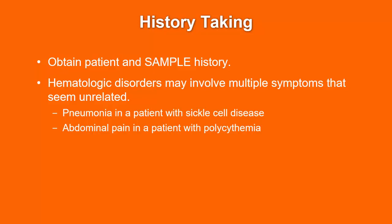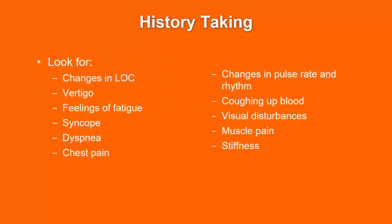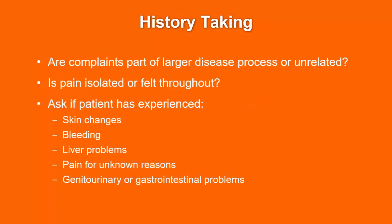Particular areas of abdominal pain could indicate other disease processes as well. Look for: changes in LOC, vertigo or dizziness, feelings of fatigue, weakness, syncope, dyspnea, chest pain, changes in pulse rate and rhythm, coughing up blood, visual disturbances, muscle pain, and stiffness. With your history taken, determine whether complaints are part of a larger disease process or unrelated, whether the pain is isolated or felt throughout, and ask about any skin changes, bleeding, liver problems, pain of unknown origin, or GU/GI problems.